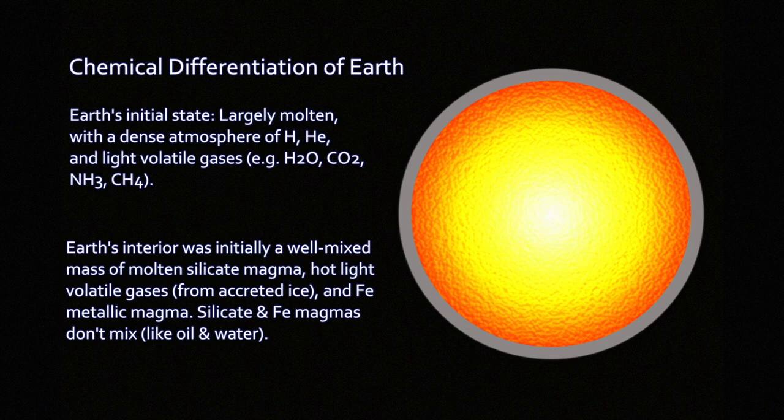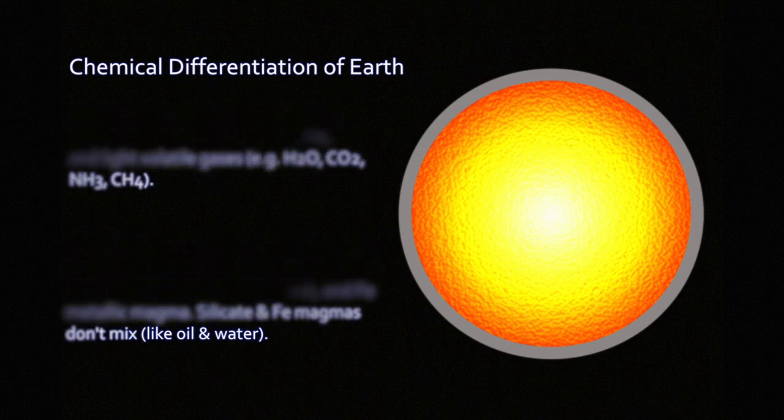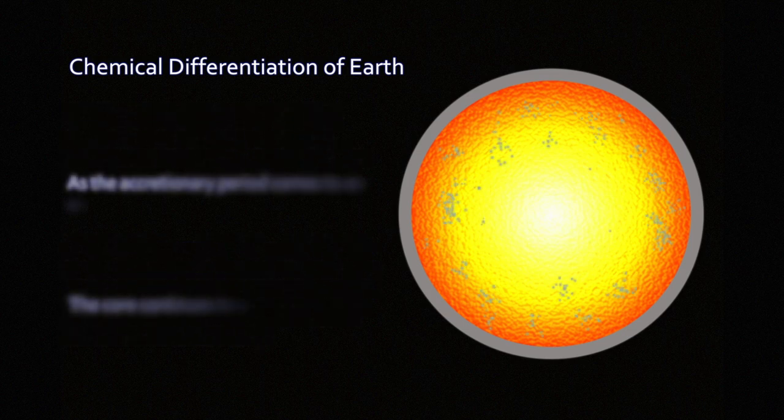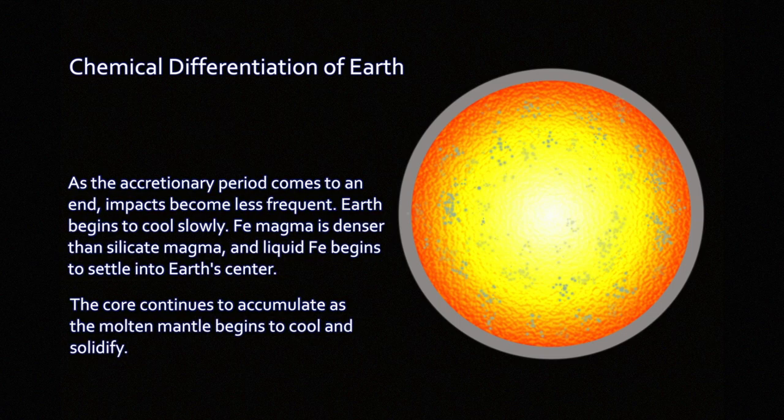Because the atmosphere at that point is also going to contain vapor from low melting point, low boiling point silicates. It's that hot. It's thousands of kelvins. And it's cooling. In the interior, metal sinks toward the core, lighter silicates rise toward the outer part of the planet.